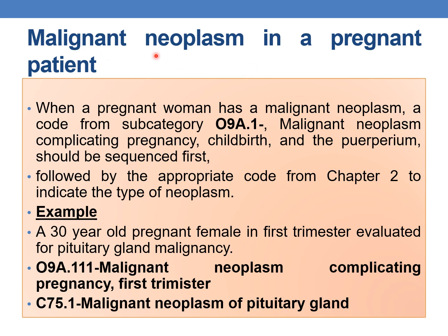Next guideline: malignant neoplasm in a pregnant woman. When a pregnant woman has a malignant neoplasm, a code from subcategory O9A.1 — malignant neoplasm complicating pregnancy, childbirth and puerperium — should be sequenced first, followed by the appropriate code from Chapter 2 to indicate the type of neoplasm. Example: a 30-year-old pregnant female in the first trimester evaluated for pituitary gland malignancy. PDX should be O9A.111 (malignant neoplasm complicating pregnancy, first trimester), followed by C75.1 (malignant neoplasm of pituitary gland).